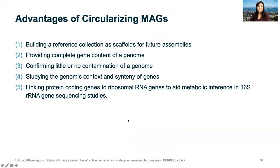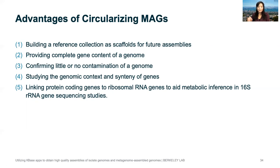The advantages of circularizing MAGs — since they're not from isolates — is that you have assurance you have all of the gene content of the genome, there's no contamination, and they can be used as a reference collection for future metagenomes if you're sampling from the same site. Because you have complete genomes, you can look at genome context and link protein gene content to ribosomal RNA genes for 16S analysis.